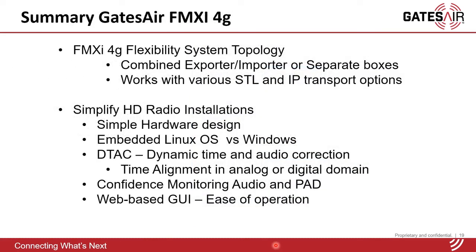In summary, the Gen 4 hardware is flexible and simpler to manage than previous generations. The time alignment methods that the FMXI offers are completely agnostic — it will work regardless of the station's STL and system topology. Even if you choose to use other time alignment methods, the tuner can be used for real-time verification of on-air time alignment. The tuner not only guarantees precise time alignment but can also be used as a tool to monitor the HD carrier, the presence of audio, and the PAD data.